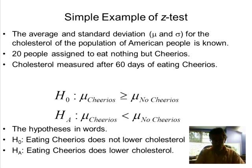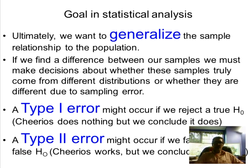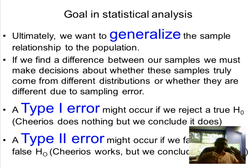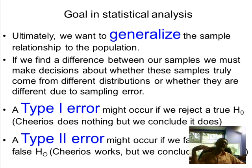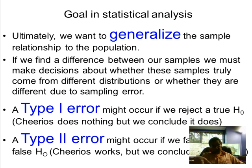Putting these into words: the null hypothesis says eating Cheerios does not lower cholesterol, and the alternative says eating Cheerios does lower cholesterol. We would take the sample average, calculate the standard error of the mean, use that to calculate the Z-test, set a critical value of Z, create a region of rejection, and make a decision.